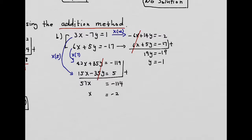So the solution is (−2, −1) for this system of linear equations.